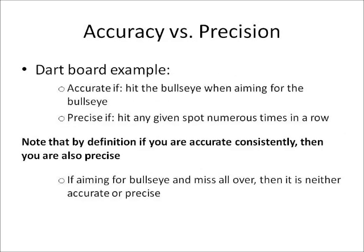Using the dartboard example: you are accurate if you hit the bullseye when aiming for the bullseye. You are precise if you hit any given spot numerous times in a row. Note that by definition, if you are accurate consistently, then you are also precise. If you are aiming for the bullseye and miss all over, then it is neither accurate nor precise. Make sure you know the difference between accuracy and precision.